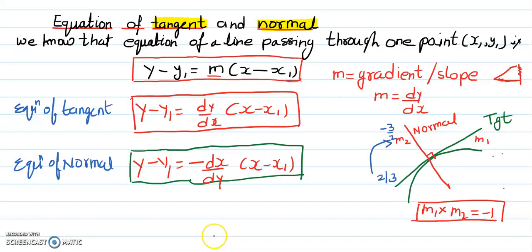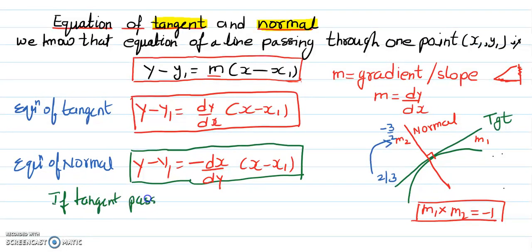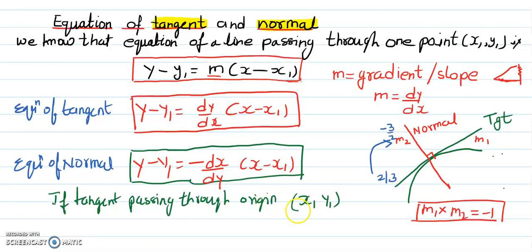If the tangent is passing through the origin (0, 0), then remember: always substitute into x1 and y1. Whenever you need to change the coordinates, always touch x1 and y1. Do not change x and y themselves — when marking papers we always see somebody puts x0 or y0, so never ever touch x and y; always touch x1 and y1, because these are the points.